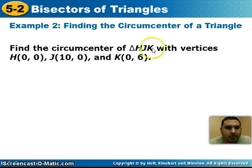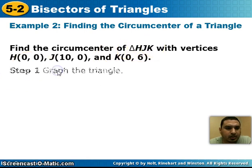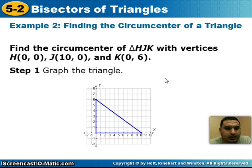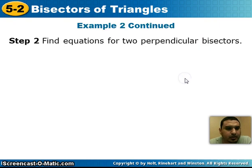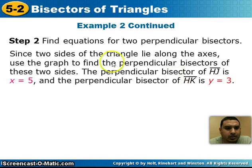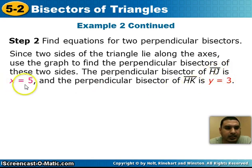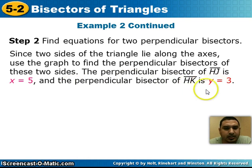Next, we're going to find the circumcenter of a triangle on a coordinate plane. They give us triangle HJK with its vertices. The first thing to do is graph the triangle. Then we find equations for the two perpendicular bisectors. Since two sides of the triangle lie on the x and y axes, we use the graph. The perpendicular bisector of segment HJ is a vertical line at x equals 5, and the perpendicular bisector of segment HK is a horizontal line at y equals 3.